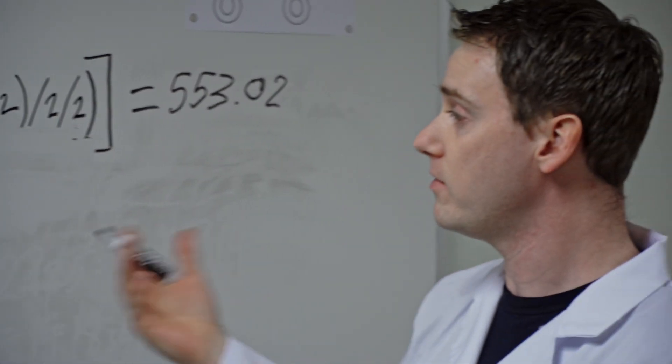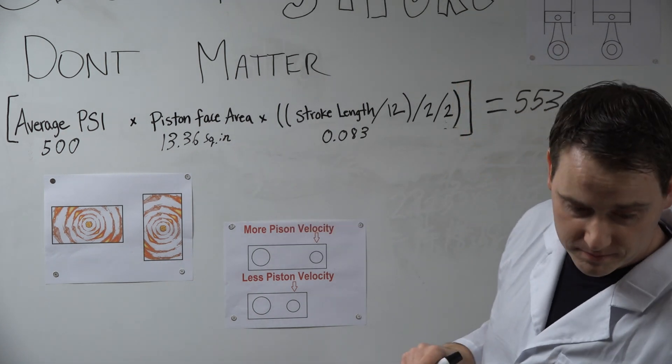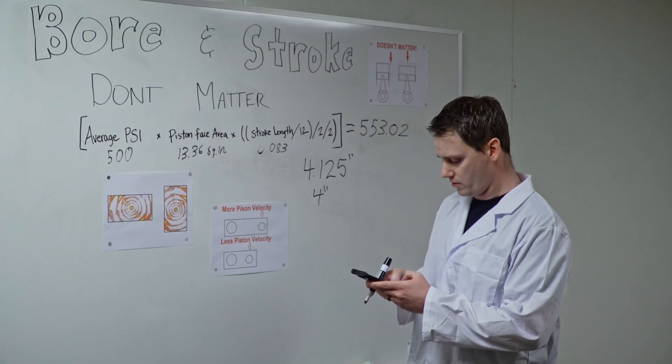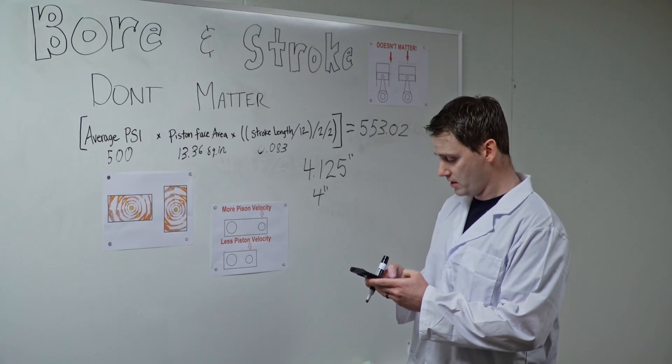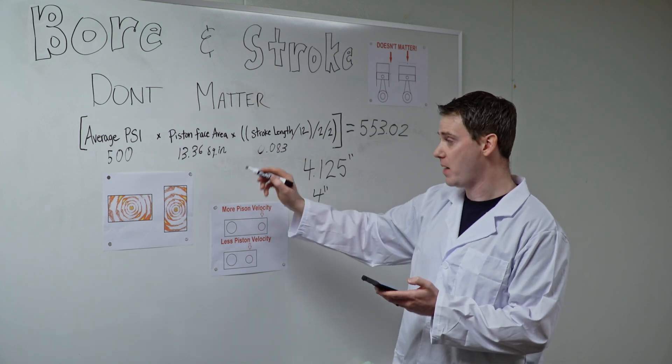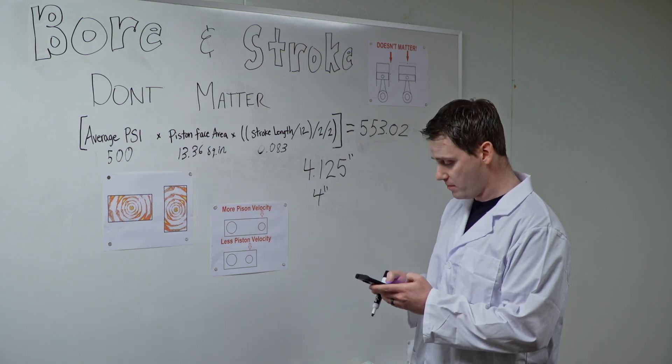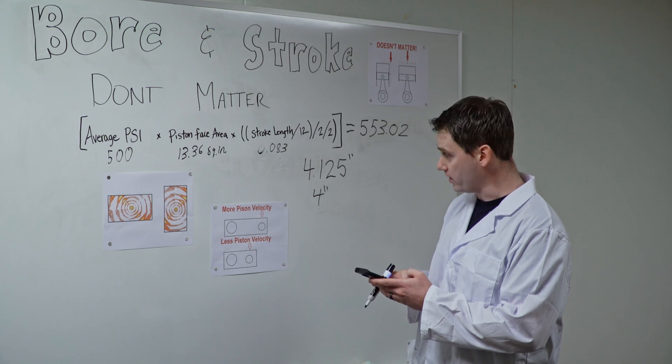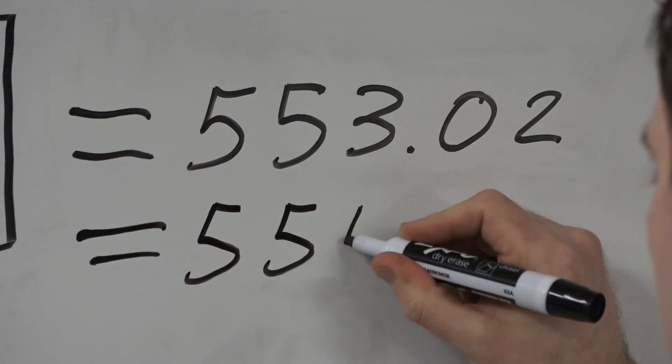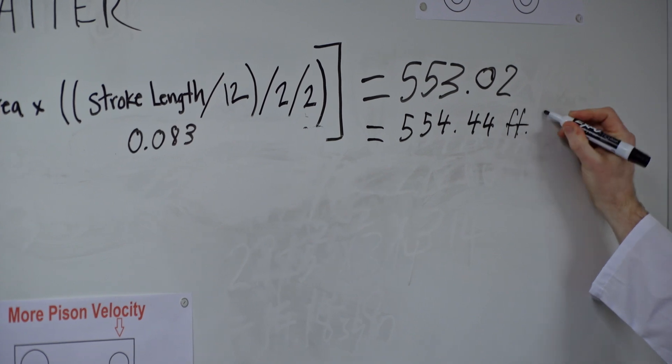So now if we multiply those three things together, let's see what this 427 will make. 500 times 13.36 equals 6,680 pounds rather than our 7,090 that we had before. Then multiply that by our effective stroke, 0.083, equals 554.44 foot pounds of torque.